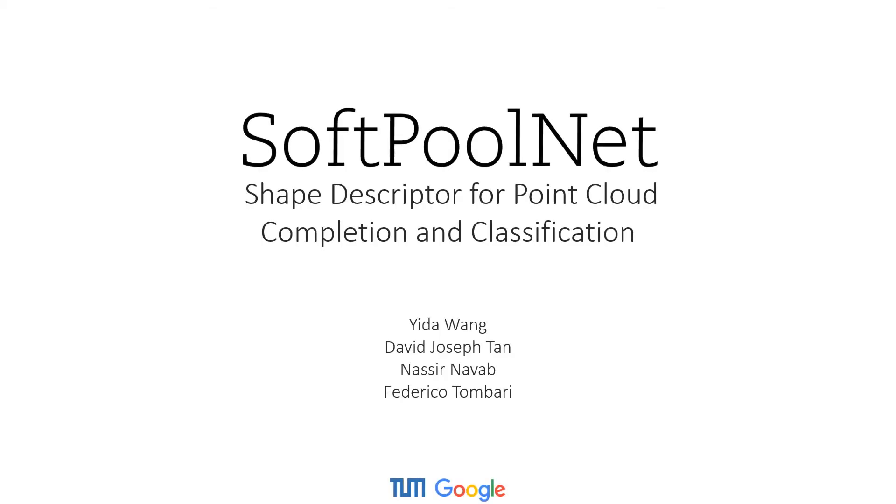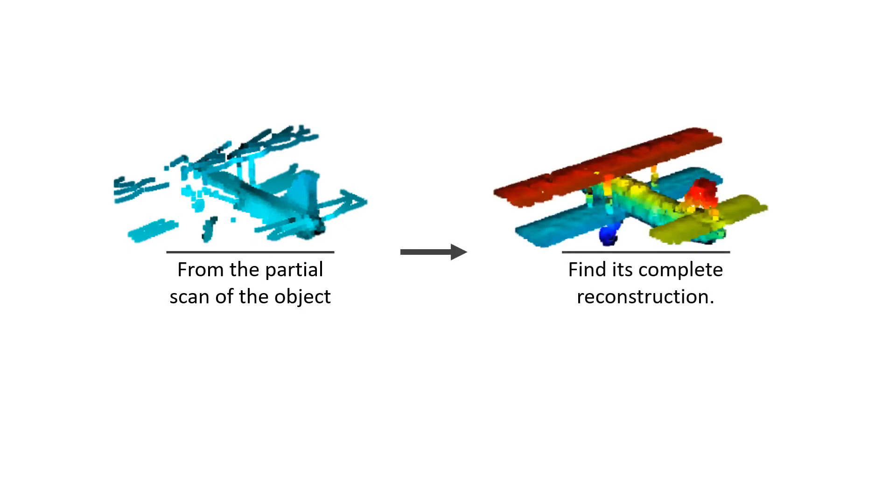This work introduces SoftPoolNet, which focuses on building shape descriptors for point clouds. The problem starts with a given partial scan of an object, which is often acquired by a depth camera from a single view. The goal then is to use deep learning methods to complete the reconstruction.